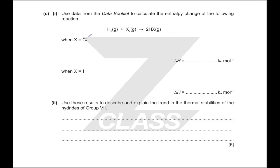For 'use data from the data booklet to calculate the enthalpy change': enthalpy of formation would be a bit too easy as that's just the answer, so you're doing this with bond enthalpies instead. You have an H–H bond, an X–X bond, and two H–X bonds; you're just looking for the difference in the totals of each side. That's ultimately just an exercise in looking things up.